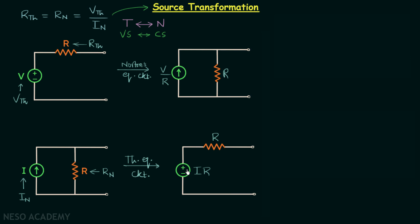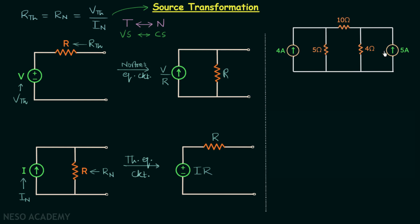These two transformations can provide a lot of help while solving questions. Now I will explain what must not be done while using source transformation. For this purpose I have taken a network with two sources and three resistors. The current through one branch will be 4 amperes, and the current through another branch will be 5 amperes. The 4-ampere current from its source is not entering the shared branch, and similarly the 5-ampere current is not entering that branch either.